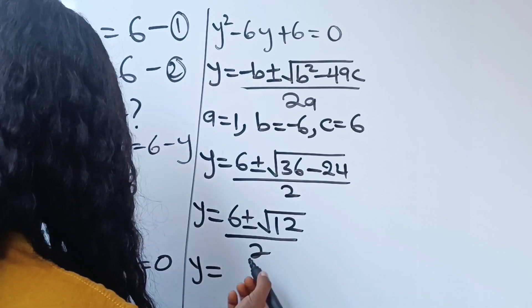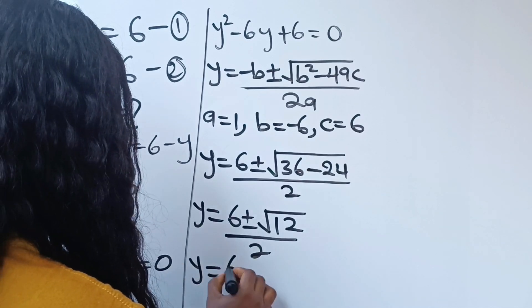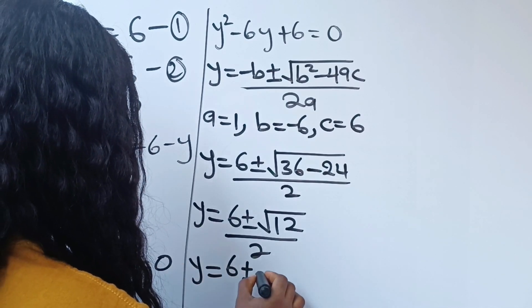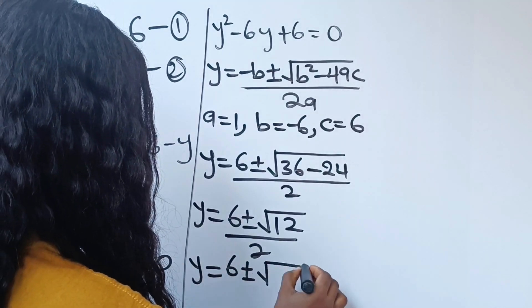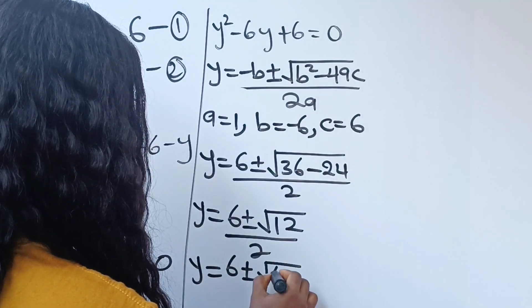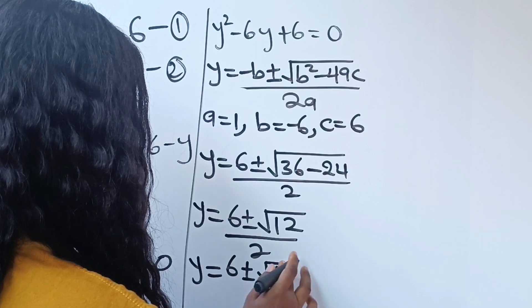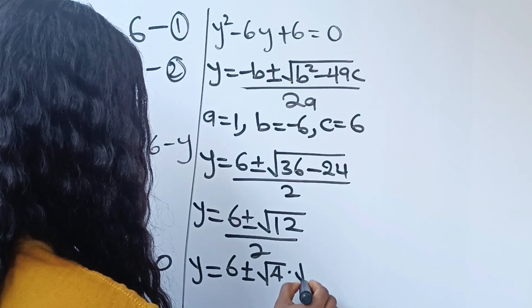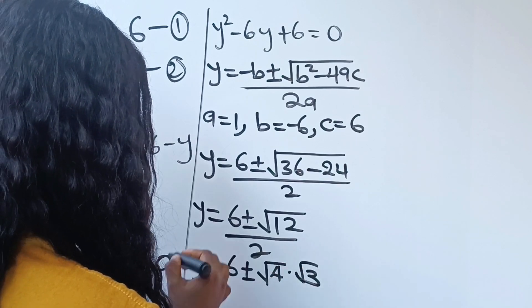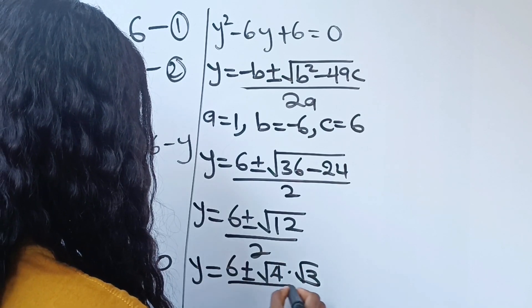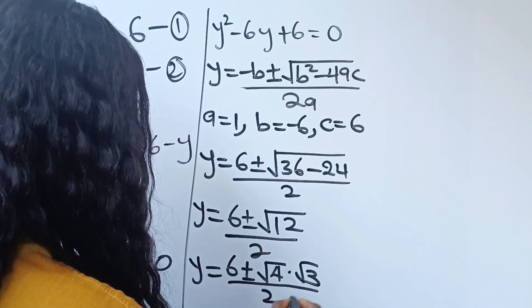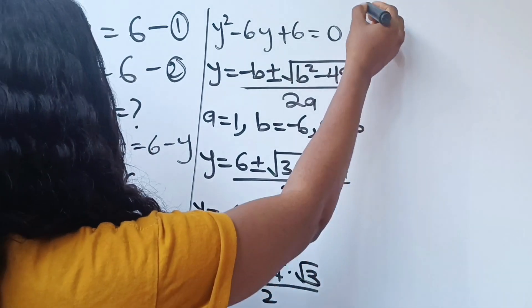So y equals 6 plus or minus — root 12 can be expressed as root 4 multiplied by root 3 — divided by 2.